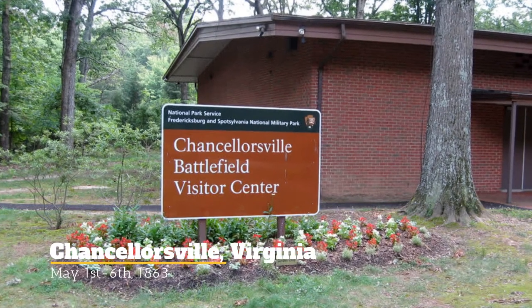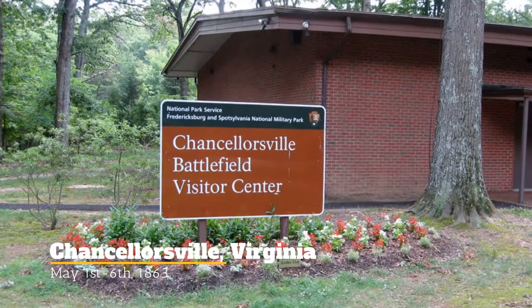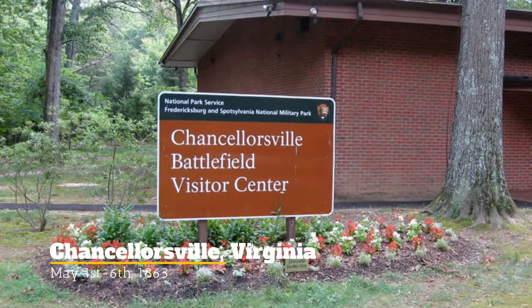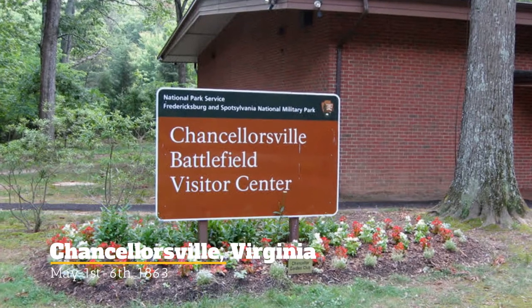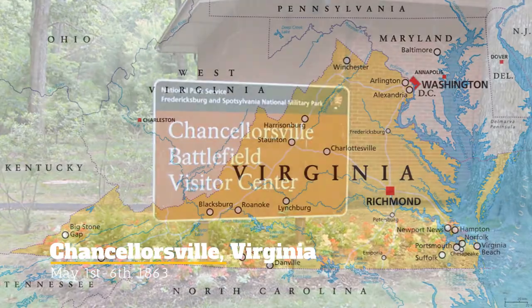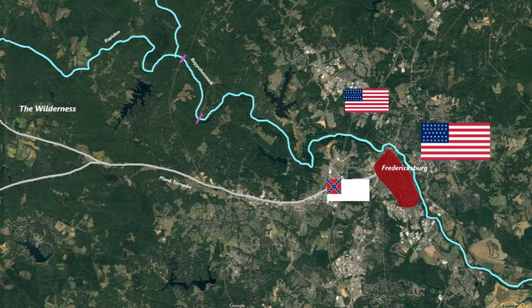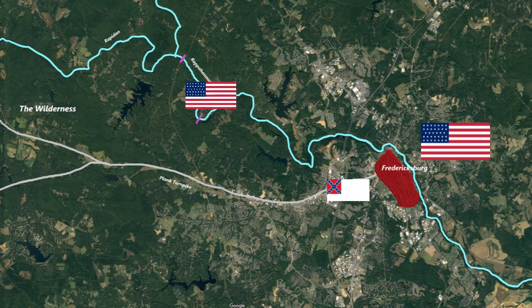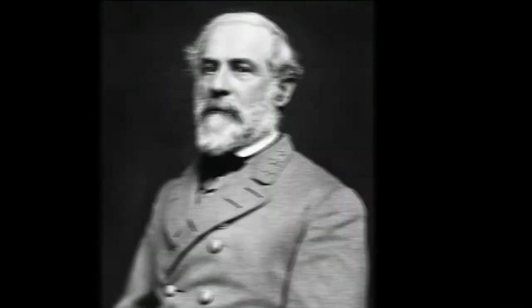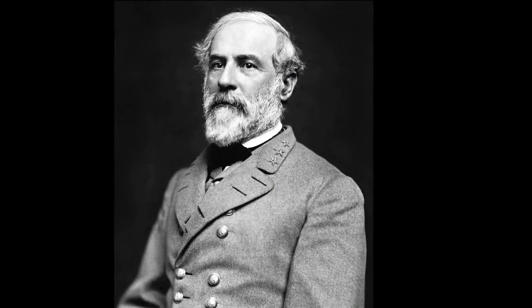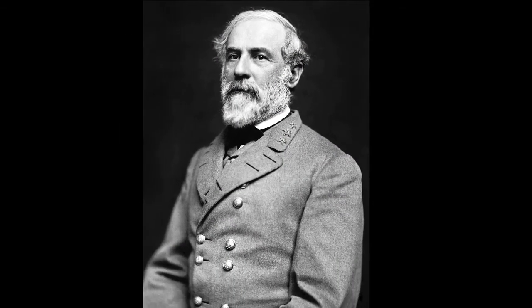The Battle of Chancellorsville took place in May of 1863 and saw the continuation of the Battle of Fredericksburg. Union and Confederates were still around the town, but a new change of command had happened for the Union. They were going to try to move their superior numbers around the outnumbered Confederates. Robert E. Lee only had about half the amount of men, but he was going to do something very different in this battle.